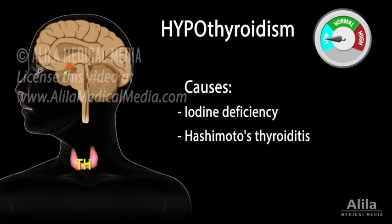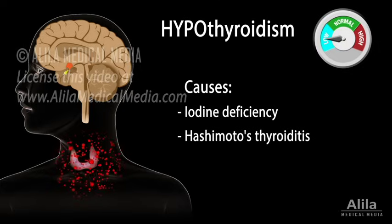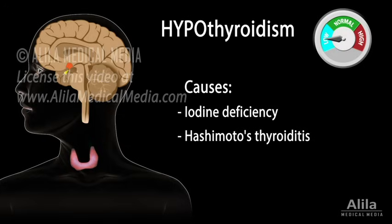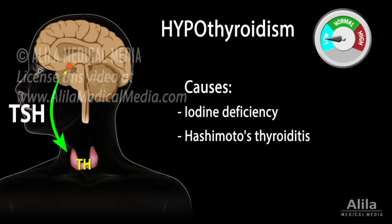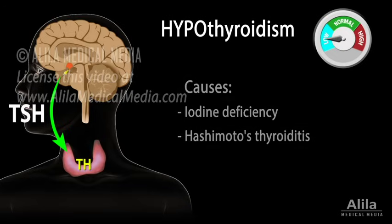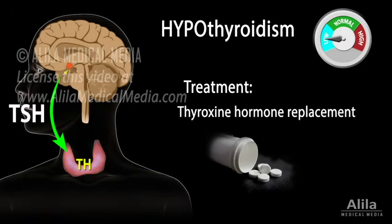Iodine deficiency and Hashimoto's thyroiditis are the most common causes. Hashimoto's thyroiditis is an autoimmune disease in which the thyroid gland is gradually destroyed by the body's own immune system. Hypothyroidism, especially when caused by iodine deficiency, may lead to swelling of the thyroid gland, known as goiter. In an attempt to fix the low levels of thyroid hormones, the pituitary produces more TSH to further stimulate the thyroid gland. The thyroid, while unable to make hormones without iodine, responds to TSH by growing in size. Hypothyroidism is managed with thyroxine hormone replacement.